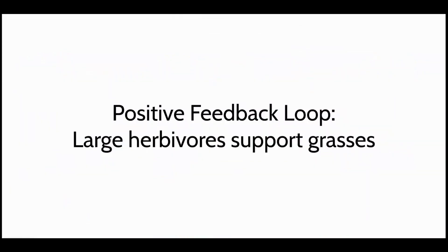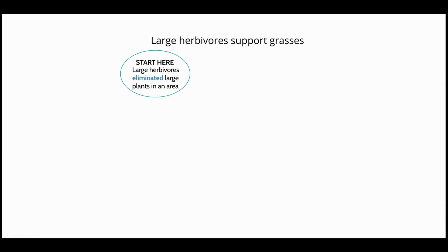We will start by examining a positive feedback loop from Earth's past in which grasslands spread due to large herbivores. Over 40 million years ago, large herbivores evolved. A population of large herbivores, like buffalo, can relatively quickly eliminate large plants in an area as they eat and trample them.